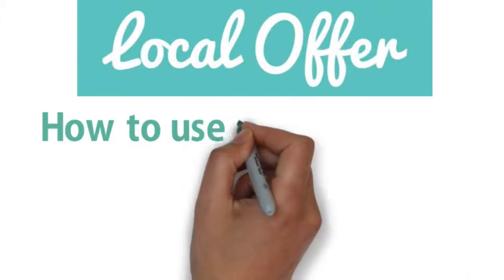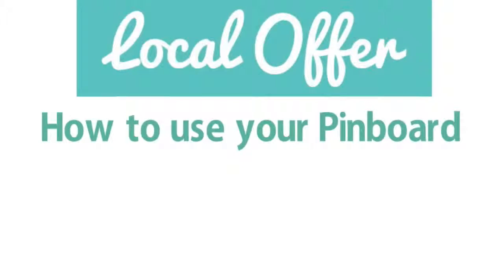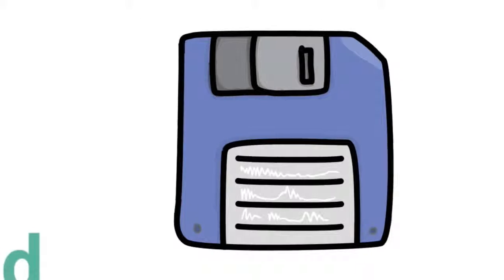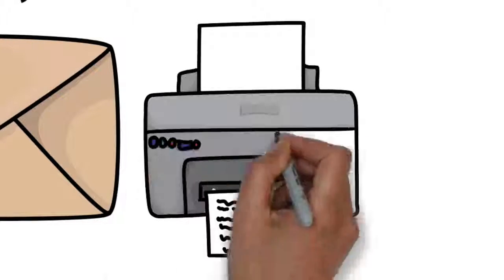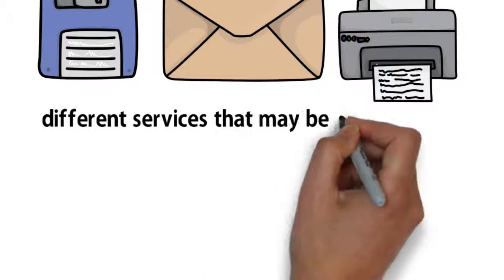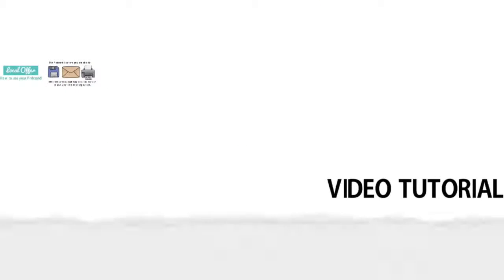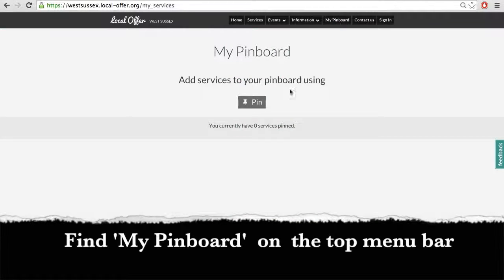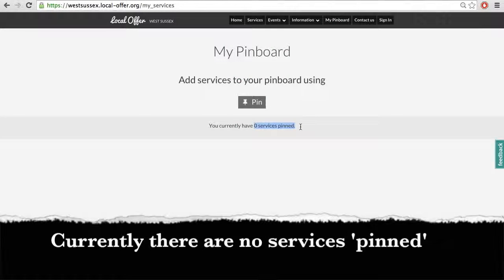How to use your pin board on the local offer. The pin board is where you are able to save, email or print different services that may be of interest to you and your child or young person. Find my pin board on the top menu bar. Currently there are no services pinned.